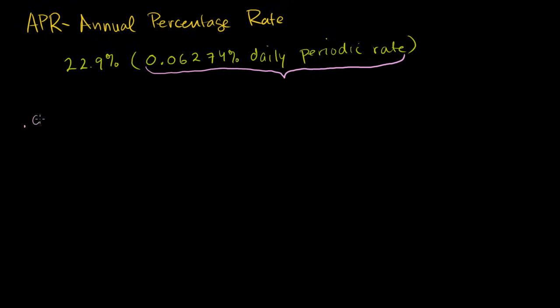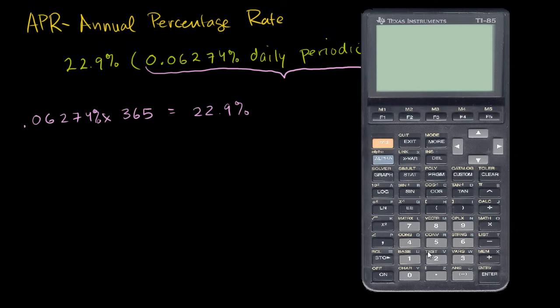So where do they get these numbers from? Well, if you just take 0.06274 and multiply by 365 days in a year, you should get this 22.9%. Let me get out my trusty calculator and see if that is what they get. So if I take 0.06274 times 365, I get right on the money, 22.9%.